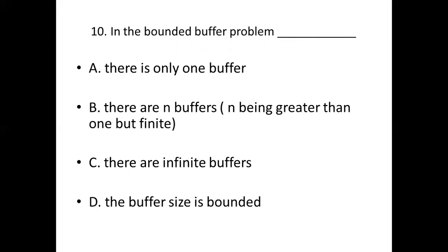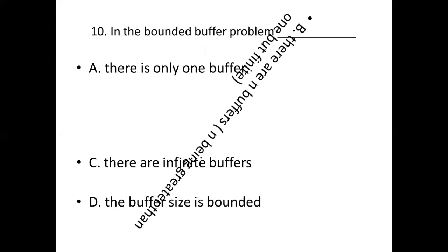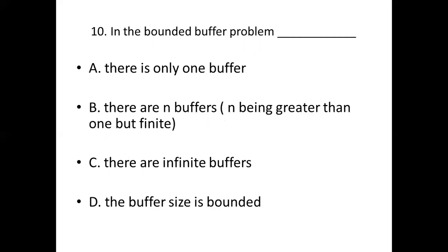Tenth bit. In the bounded buffer problem, Option A: There is only one buffer. Option B: There are N buffers. Option C: There are infinite buffers. Option D: The buffer size is bounded. Answer: Option B, There are N buffers.